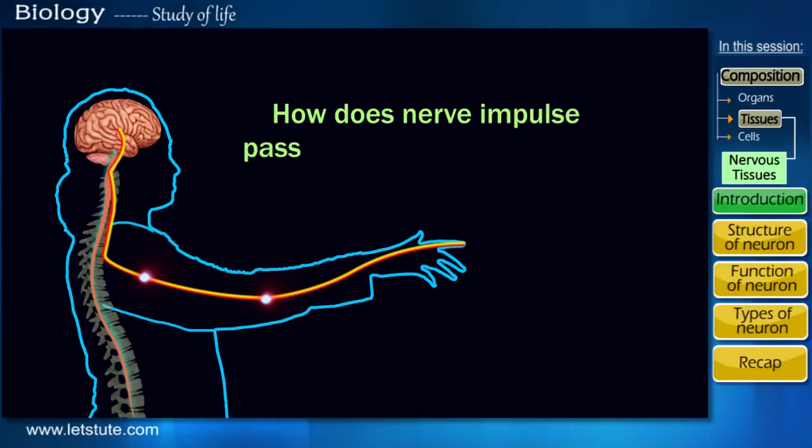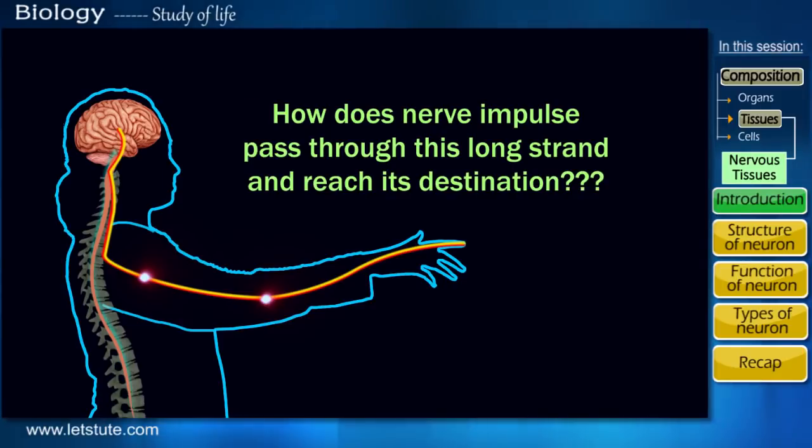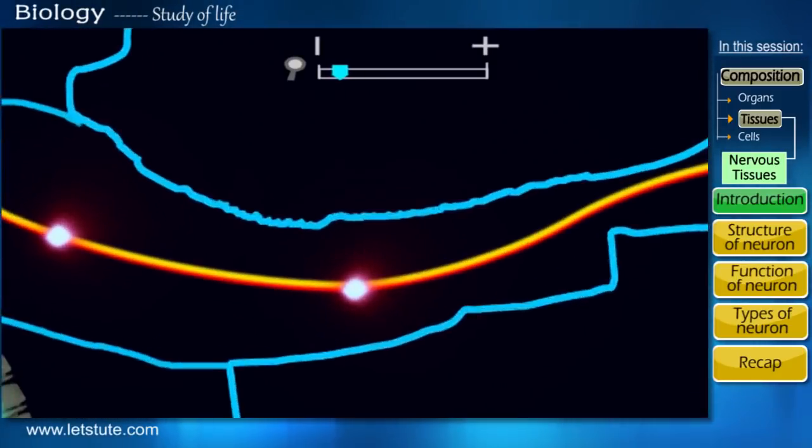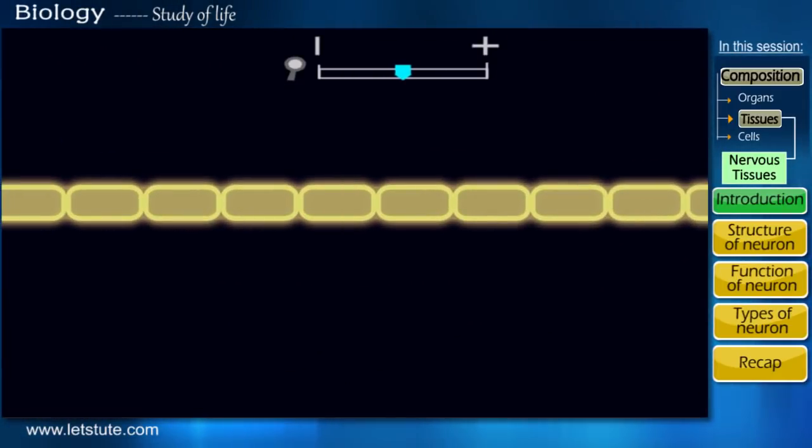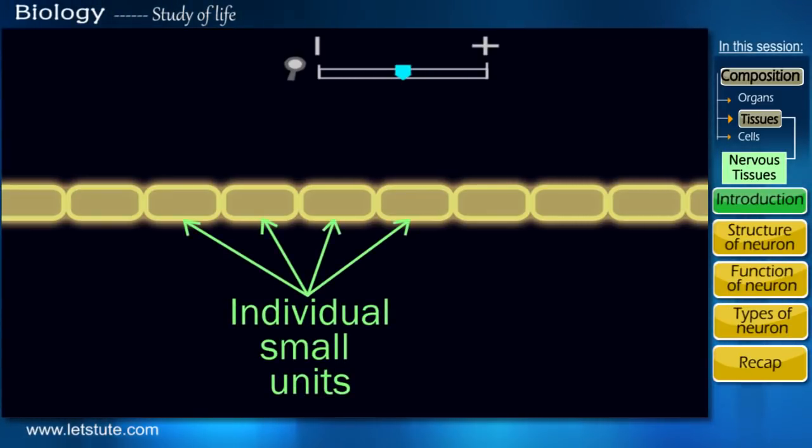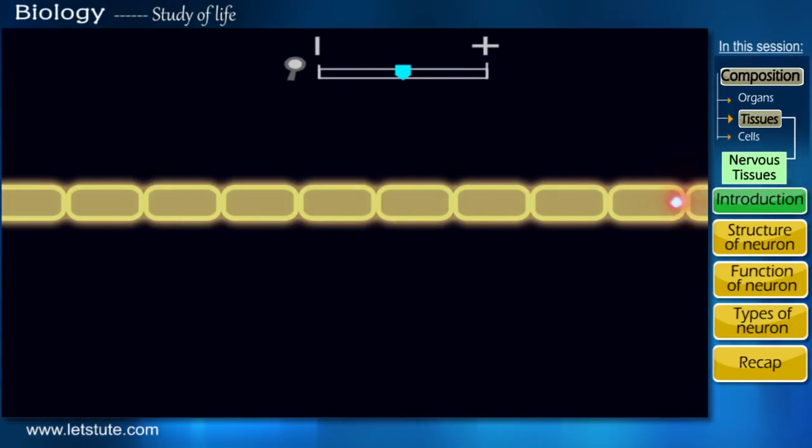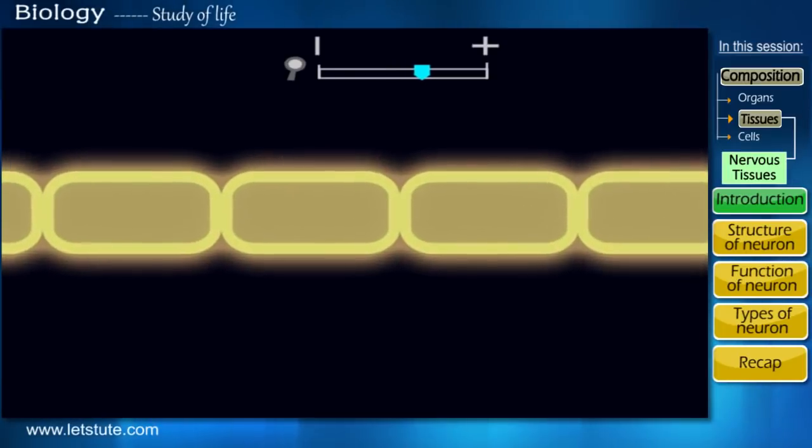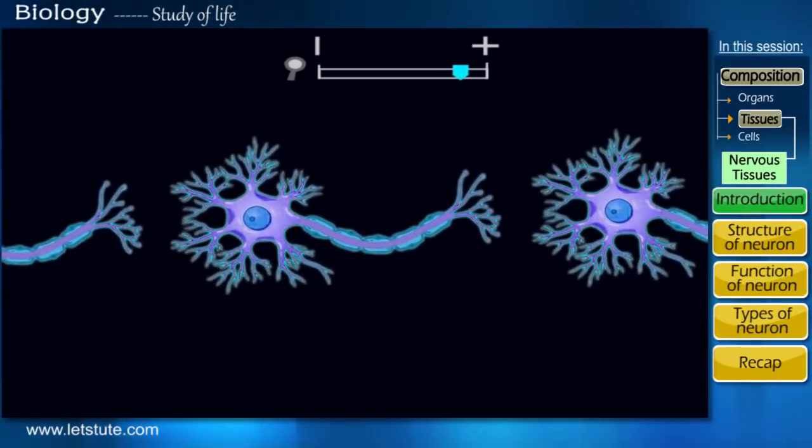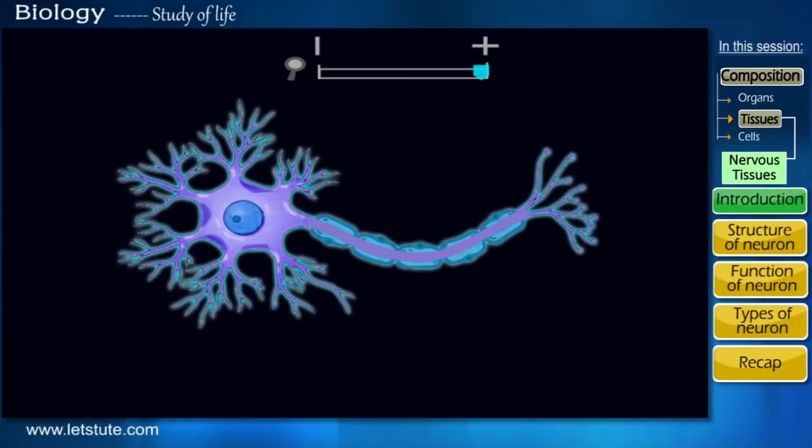But how does this nerve impulse pass through this long strand and reach its destination? If we zoom in a little, we'll see that the nerve fiber is actually made up of small units connected to each other. And the signal passes via all these units. But let me tell you that the unit here is actually a cell that looks something like this.